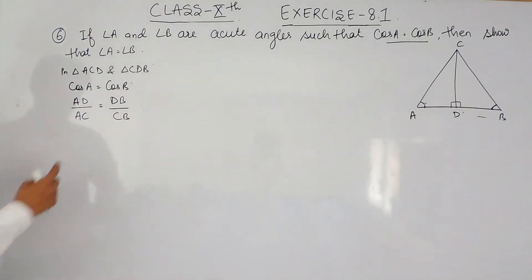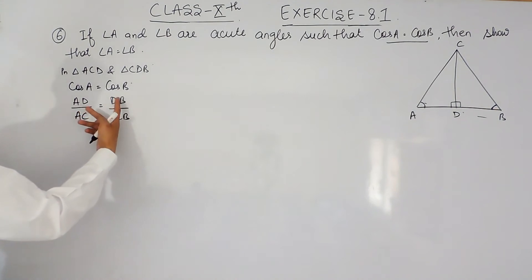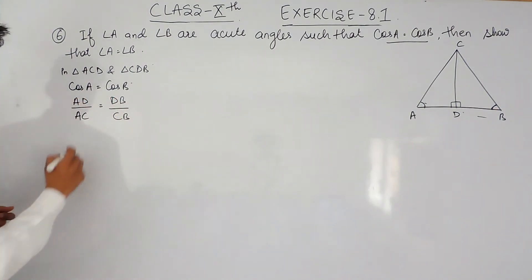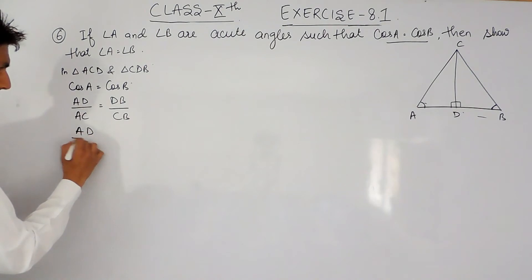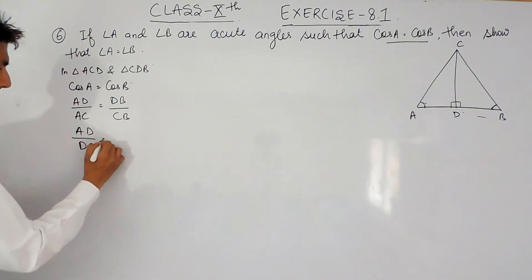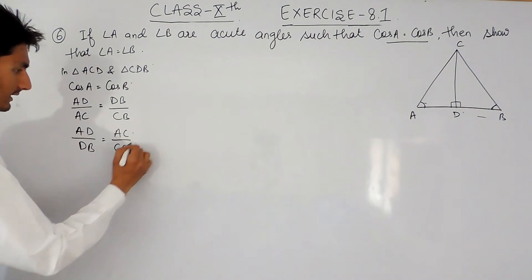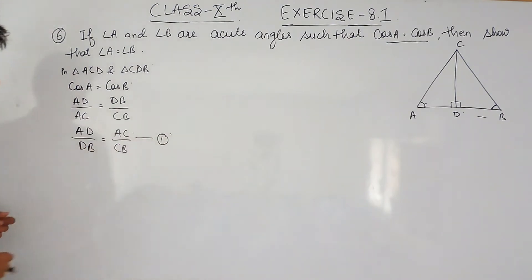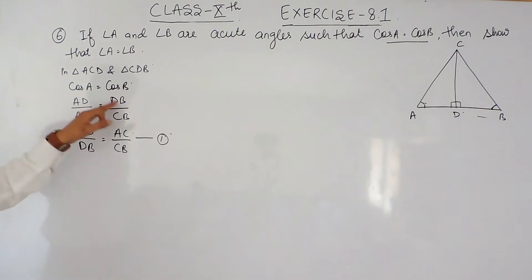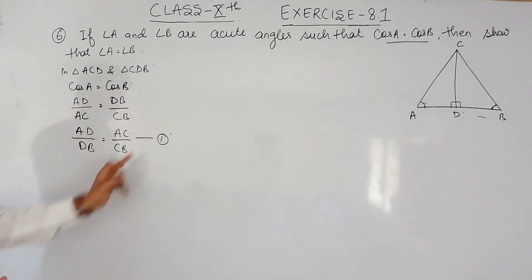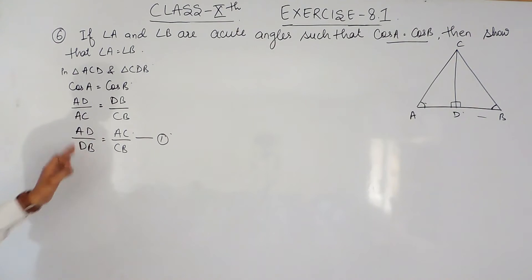Since cos A equals cos B, we exchange these two values to get AD/DB = AC/CB. This is our first equation. Changing these values by cross-multiplication does not affect the overall value of the expression, which is valid according to mathematics.